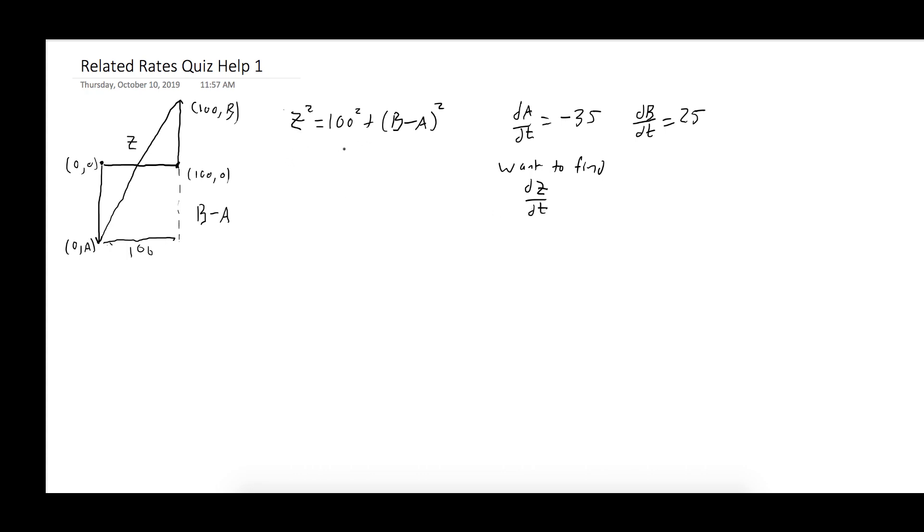So what we can do is we can take our equation here and take the derivative of both sides with respect to time, and then we'll plug in all the information we have. It's going to turn out that we might need to still discover some more information. But let's do this. So 2Z dZ/dt. Now notice here my 2 and my Z look very similar, and that's why I crossed my Z's. Okay, is equal to, well the derivative of 100² is 0, the derivative of (B minus A)². So we bring the 2 in front, (B minus A), and then we multiply by the derivative of the inside, which is dB/dt minus dA/dt.